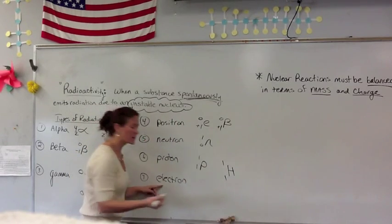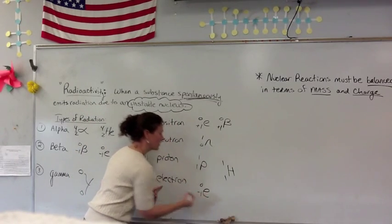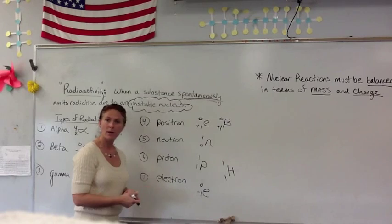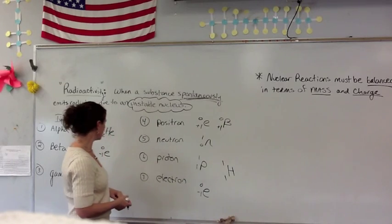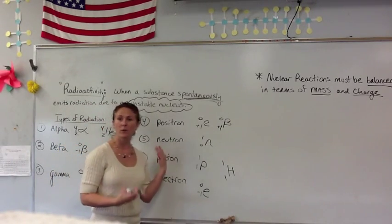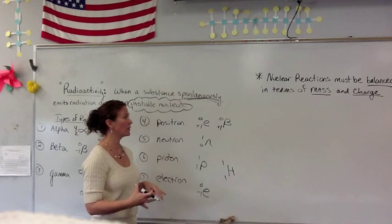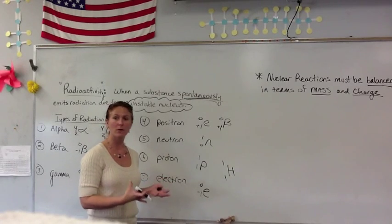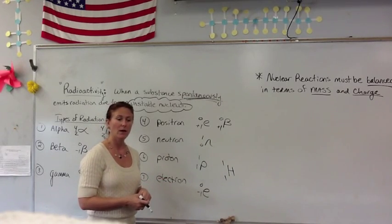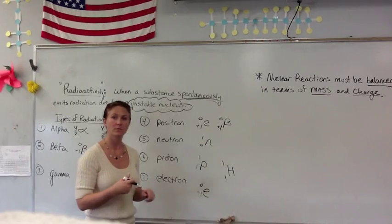An electron can be symbolized the same as a beta particle. Knowing these symbols, we're going to use them and actually write out some nuclear equations and show how they're going to be balanced in terms of mass and charge.